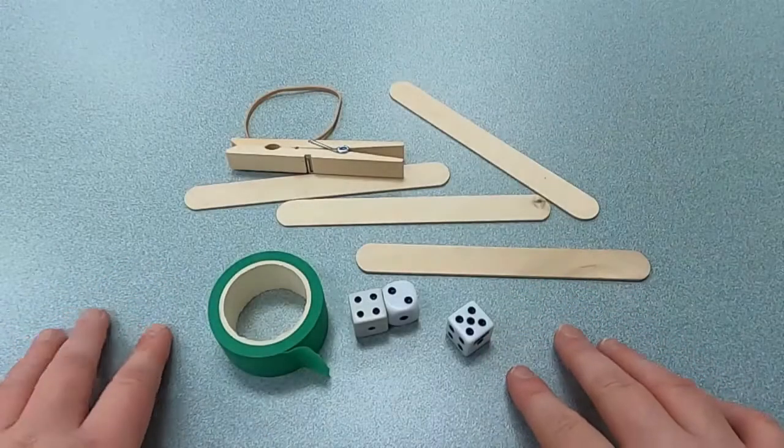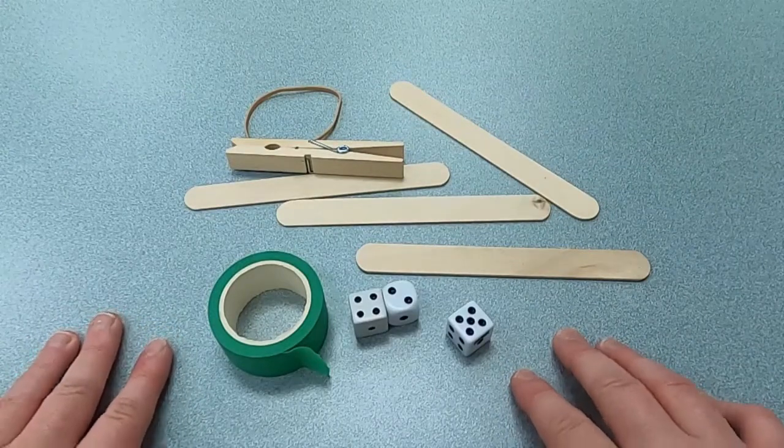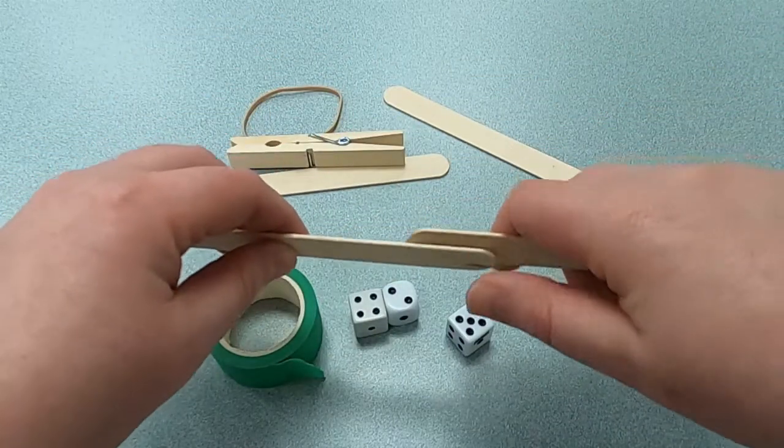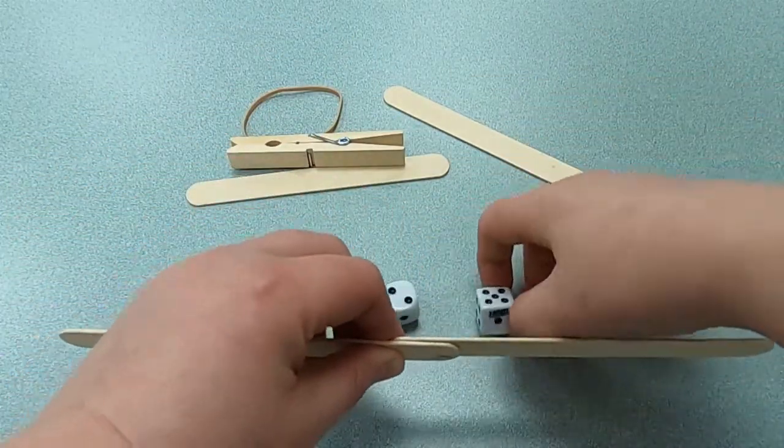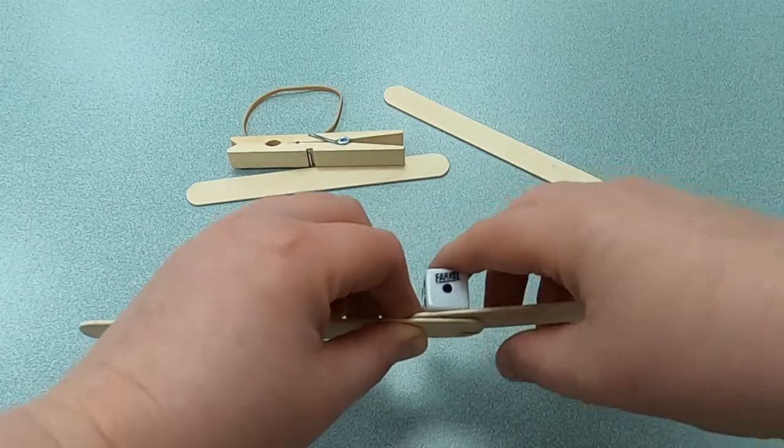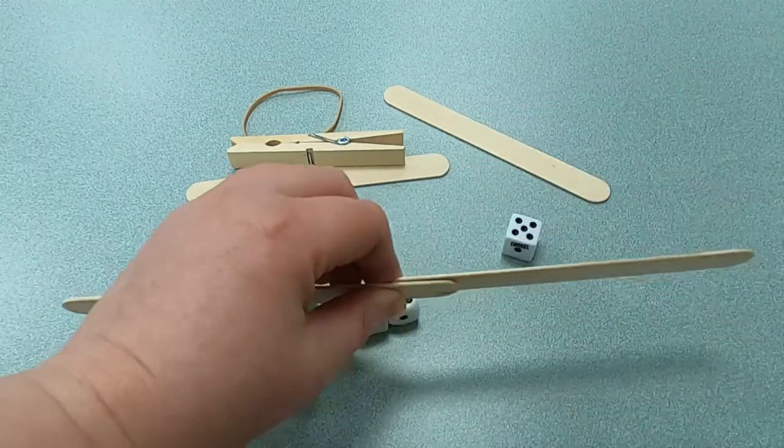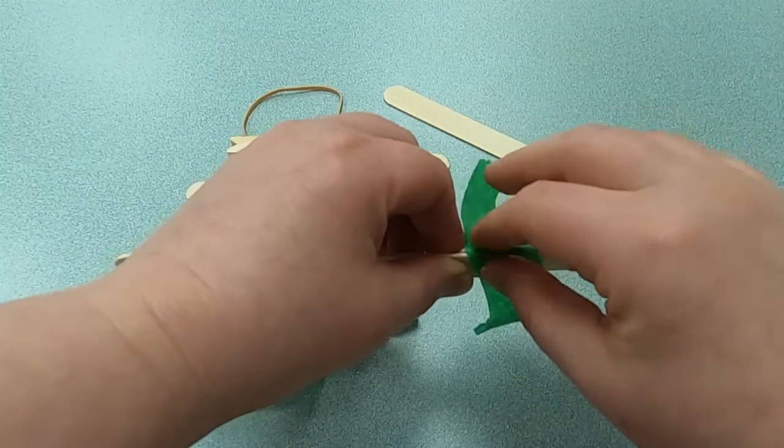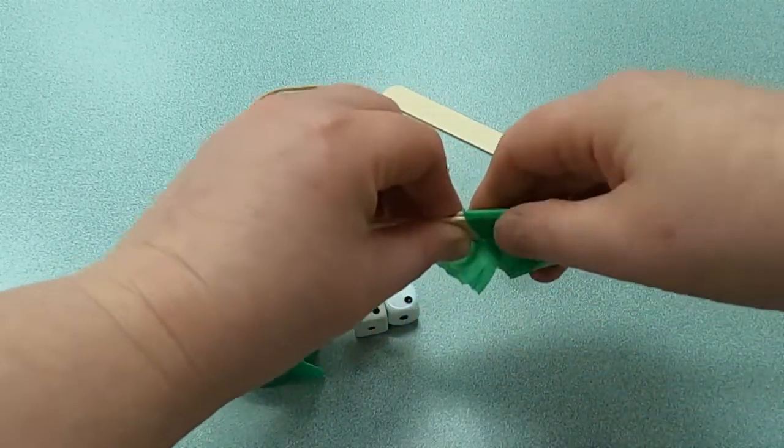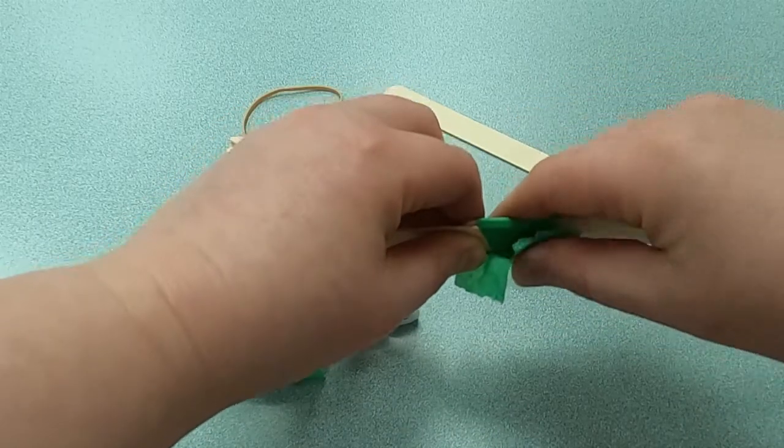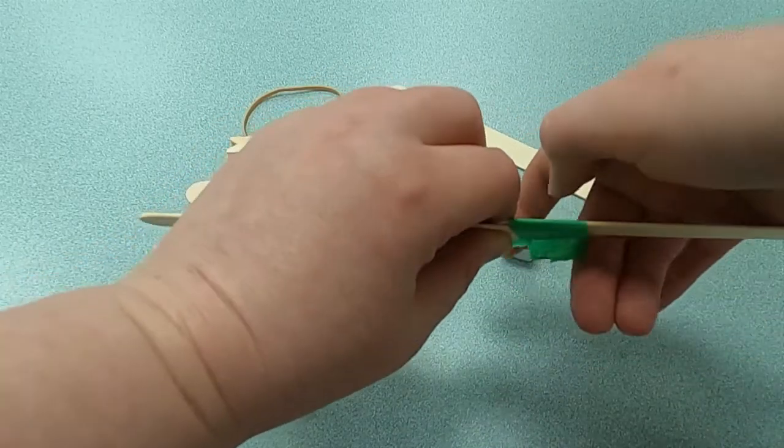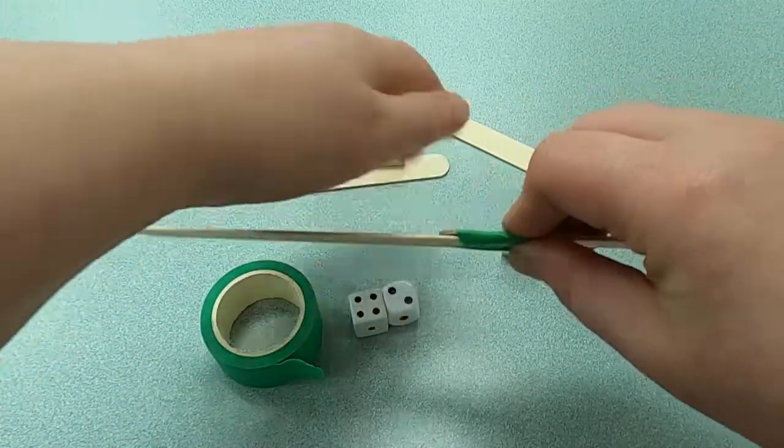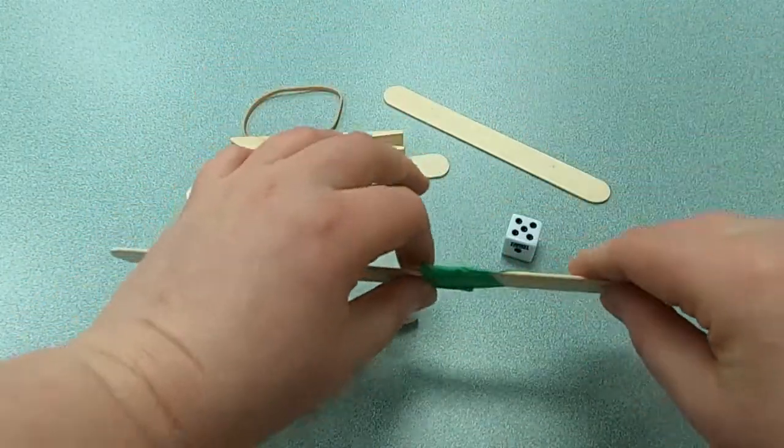So let's go ahead and get started. Okay, so let's start making our trigger launcher. And the first thing we're going to do is we're going to need to make a base for it. So we're going to take two of the craft sticks, and we're going to put them so they're big enough for a dice to be on it. And once you have that, take a piece of your tape and wrap it around. And it doesn't have to be fancy or neat, but just the point is to make it secure. There we go. I've got my base.